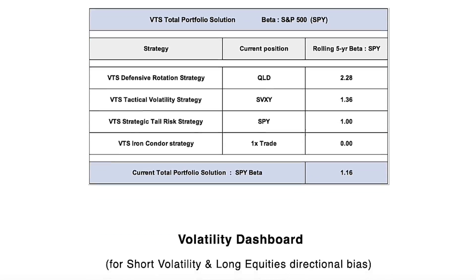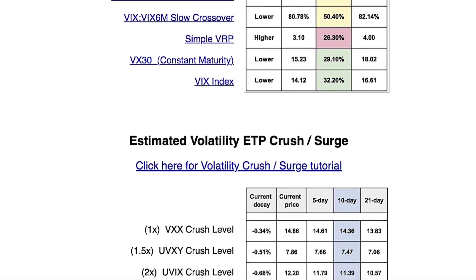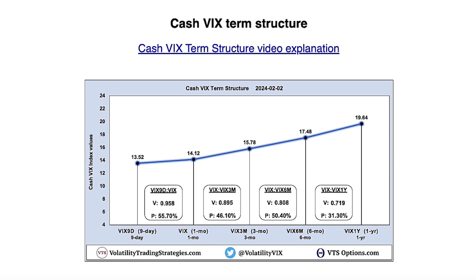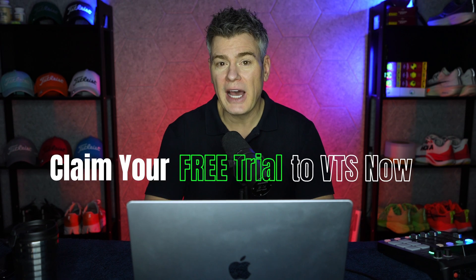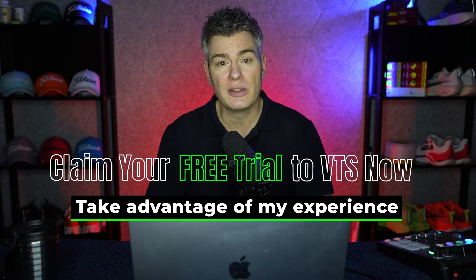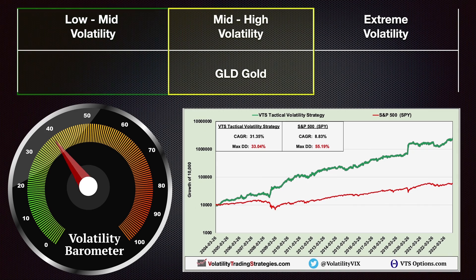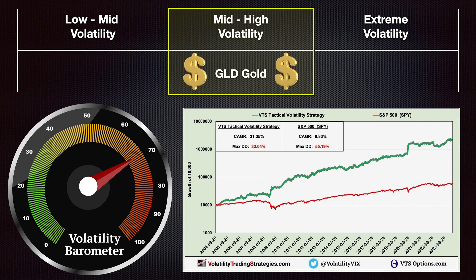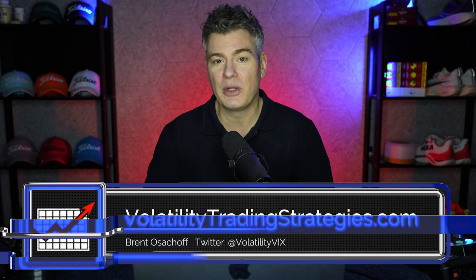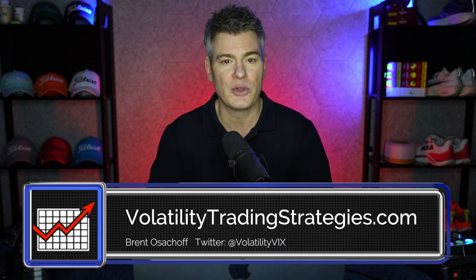The cash VIX term structure — including percentile ranks and historical averages — all goes out to the VTS community in every Daily Trade Signals email. If you need guidance through this latest crisis, there's a free two-week trial to VTS available in the description or on my website. We exited our short volatility positions a week ago and moved into gold — claim your free trial below to find out how we knew to do that. Stay safe, traders. For an extensive volatility metrics dashboard updated daily and to see all live trades for our tactical rotation and option strategies, click the link and claim your free trial to the VTS community.